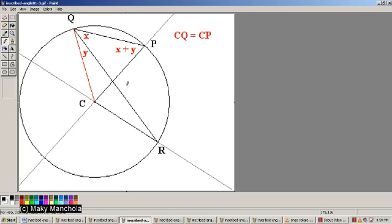Next, by the exterior angle theorem, the angle that you see right here will have to be the sum of X and X plus Y. The result is this measure right here, 2X plus Y.